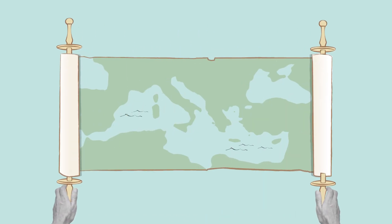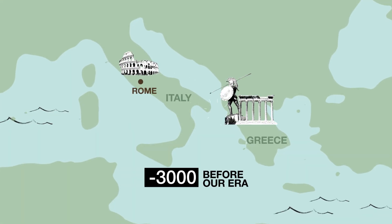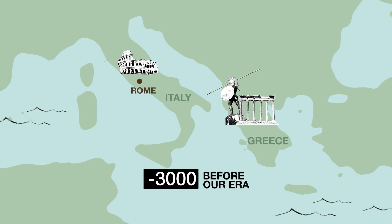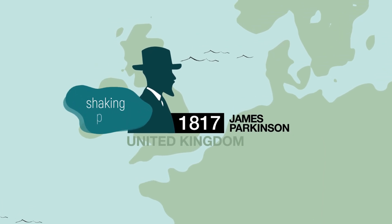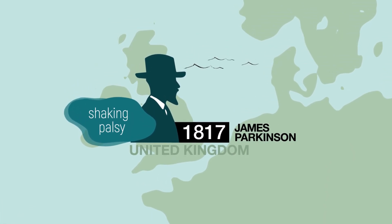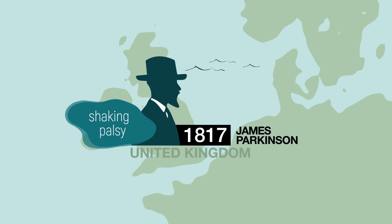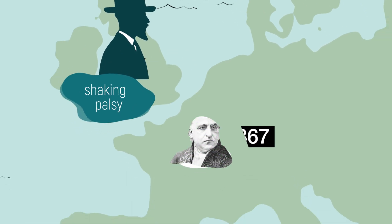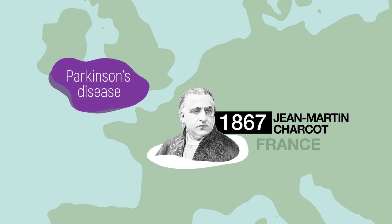Early descriptions of Parkinson's disease appeared in ancient Greek and Roman literature 3,000 years before our era. In 1817, the first clinical symptoms of the disease, then called shaking palsy, were broadly described by James Parkinson. Jean-Martin Charcot named the disease after Parkinson in 1867.